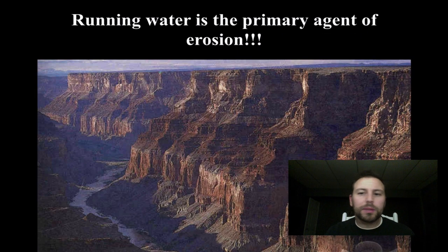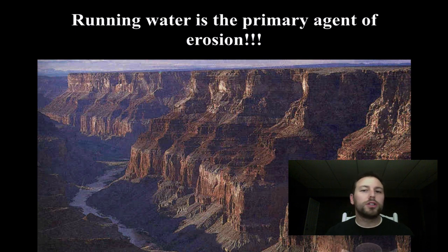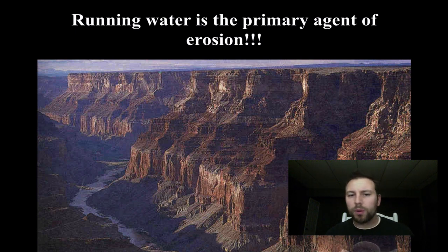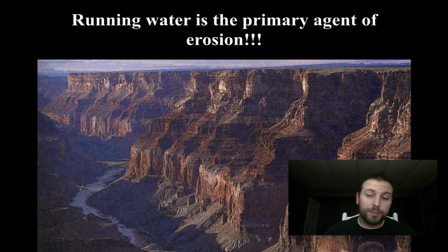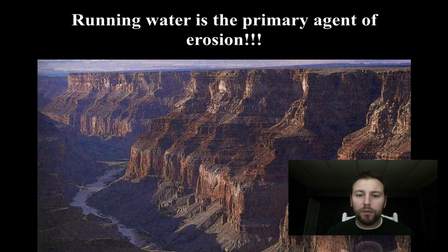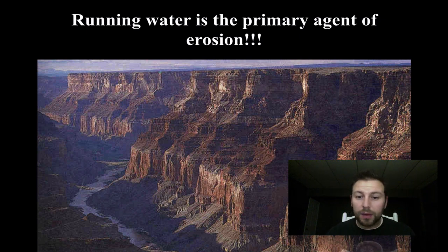Running water is the primary agent of erosion on earth. It is what moves a huge amount of material over massive distances pretty much 24 hours, 7 days a week, non-stop on earth. Even in dry places running water can be a very huge force in shaping that landscape, as we can see here with pictures from the Grand Canyon and the Colorado River shaping and changing that landscape over time.